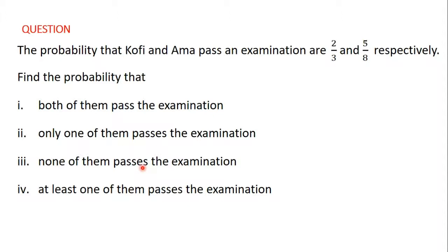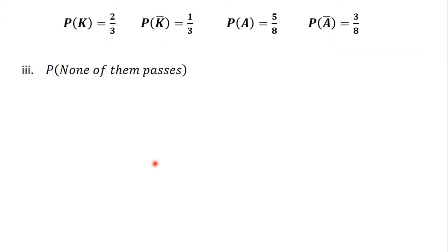Let's begin with the third part. We know that the probability that Kofi passes the examination is 2 divided by 3, and the probability that Kofi fails the examination is 1 divided by 3. The probability that Amma passes the examination is 5 divided by 8, and the probability that Amma fails the examination is 3 divided by 8.